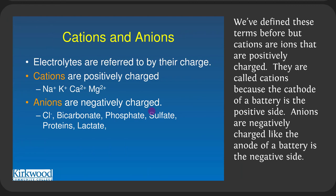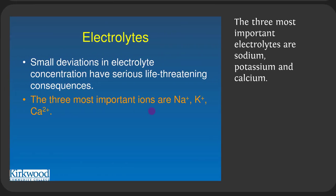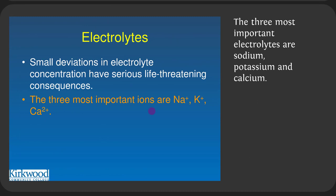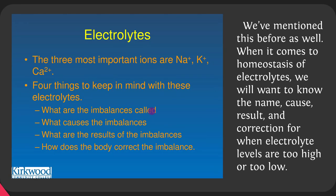Protons and bicarbonate play a role in acid-base balance. Sodium acts like a currency used by cells: after it's pumped out, it's allowed back in if it brings glucose with it or if it kicks calcium out of the cell. Cations are positively charged ions — named after the cathode (positive side) of a battery. Anions are negatively charged — named after the anode (negative side). The three most important electrolytes are sodium, potassium, and calcium. In nursing you'll also add chloride and magnesium. When it comes to electrolyte homeostasis, we want to know the name, cause, result, and correction for when electrolytes are too high or too low.